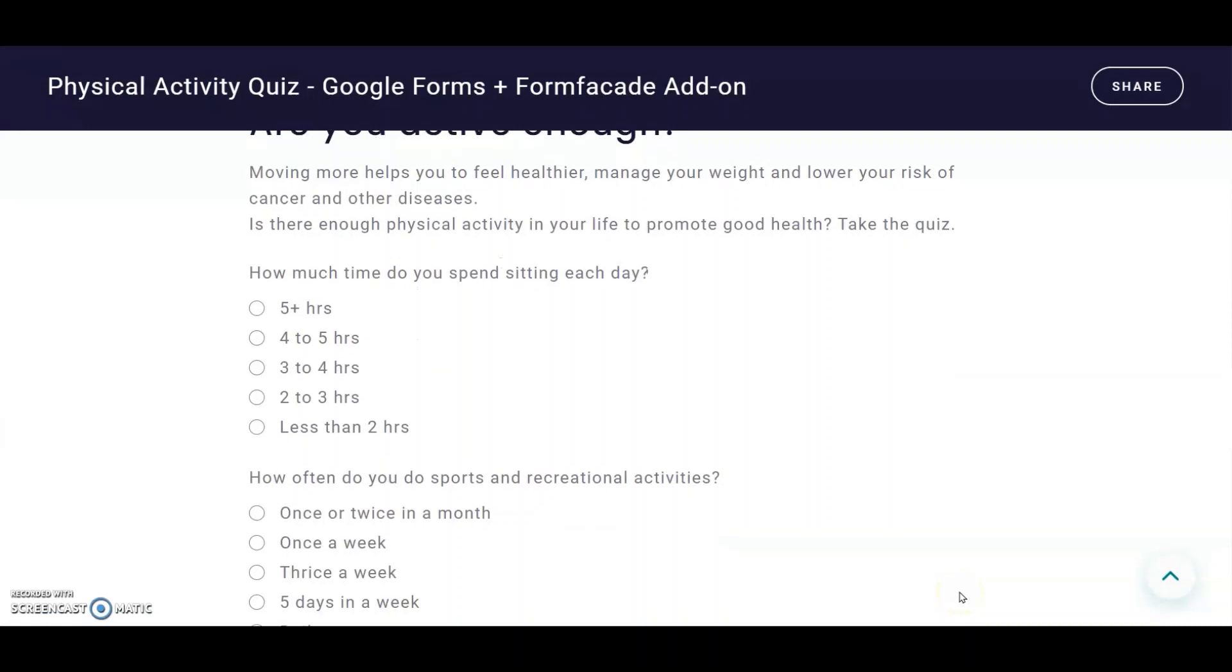The first parameter, all, calculates the total score across the three multiple choice questions. Then the second parameter, 1, 2, 3, 4, 5, assigns points for answer choices A, B, C, D, and E, respectively.